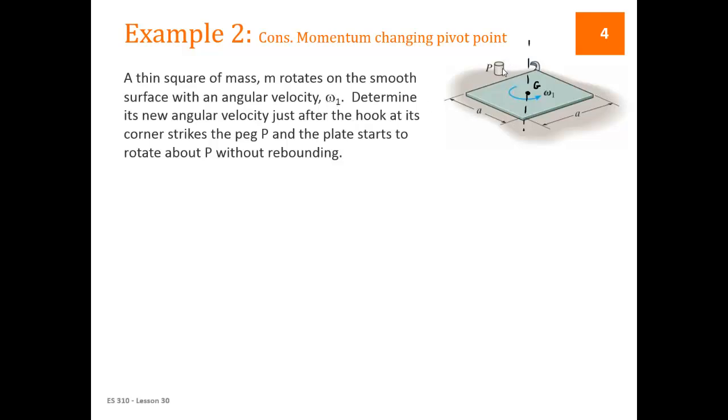So we have the plate, which initially is spinning around its center of gravity, which is here in the middle, and it's spinning with an omega1. And then it gets caught on the peg and starts spinning around the peg, point P. So we have two moments of inertia again.